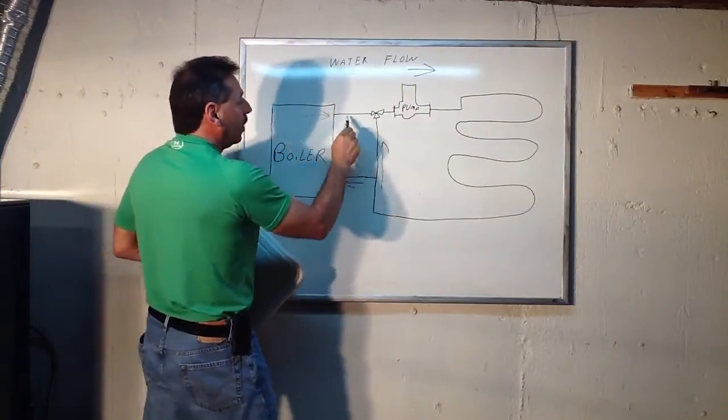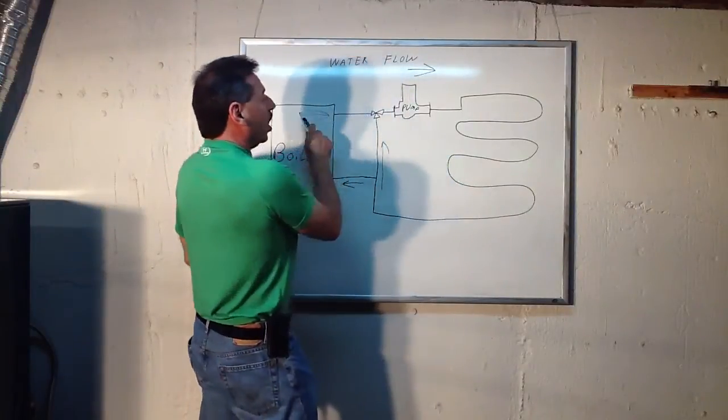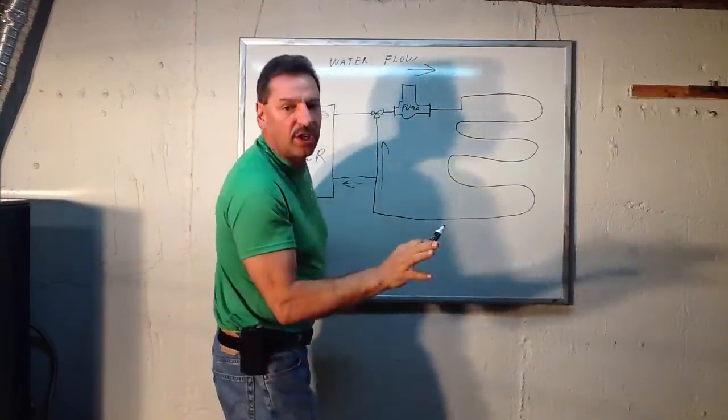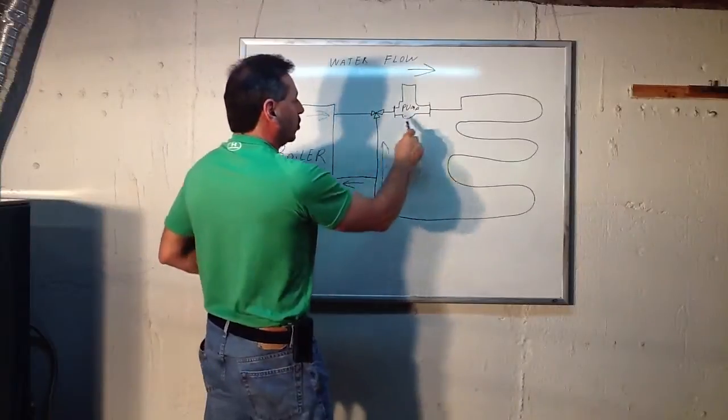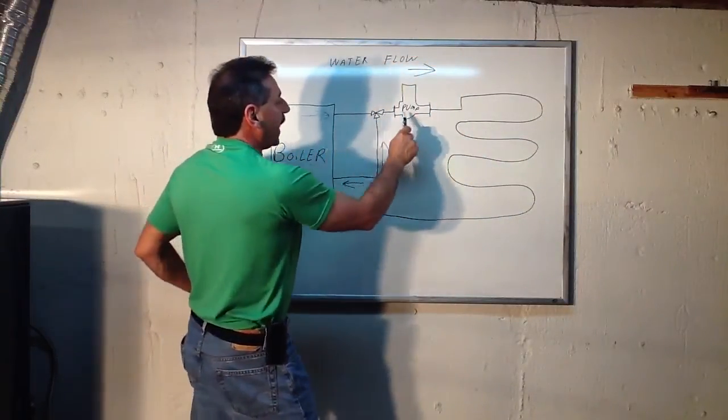So now it's taking it again, causing the 180 degree water to mix with the 120 degree water, because it's cooled around the floor, through the boiler and back out very hot.